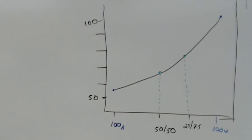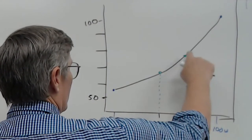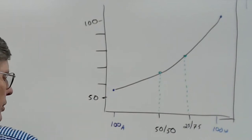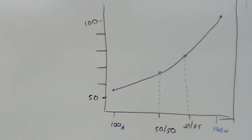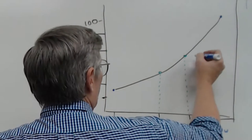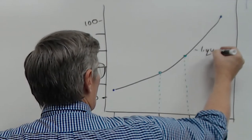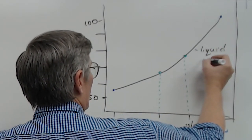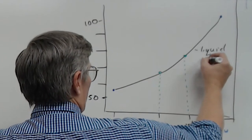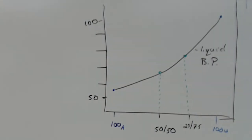The vapor pressure still has to equal the air pressure for the liquid to boil. We should notice that after a while the temperature has to be hotter to boil the liquids, because the liquid has changed ratio, and this will gradually increase. This curve is called the liquid's boiling point curve, based on the mole fraction of the two different liquids.